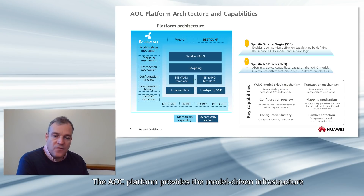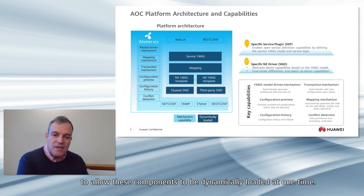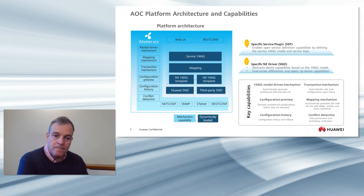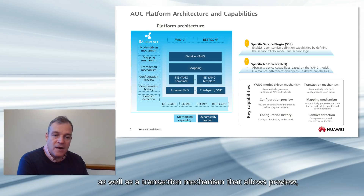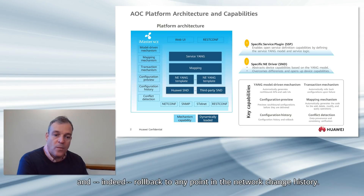The AOC platform provides the model-driven infrastructure to allow these components to be dynamically loaded at runtime. It provides the engine that allows the merging of configuration with conflict detection in case of error, as well as a transaction mechanism that allows preview, network-level rollback on failure, and rollback to any point in the network change history.